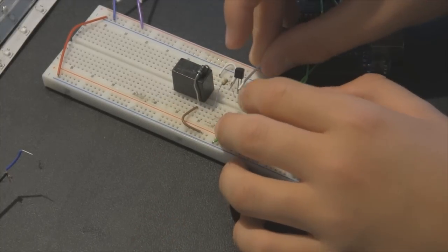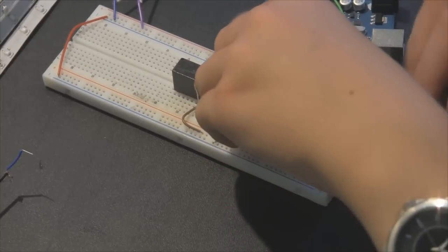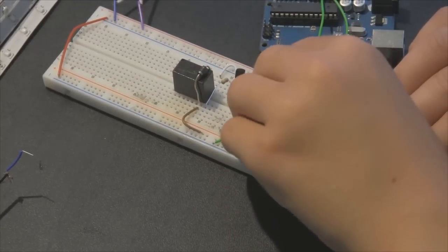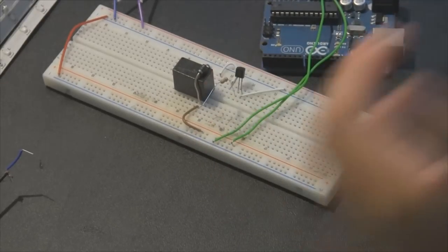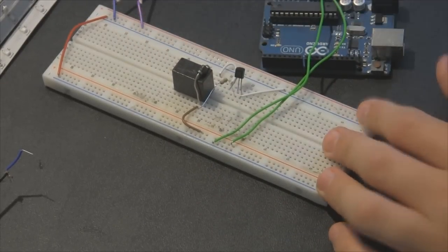And to the emitter of the transistor, you need to connect that to ground. So just plug that into ground. So we're finished with the five volts. Now it's time to hook up our 12 volt circuit.